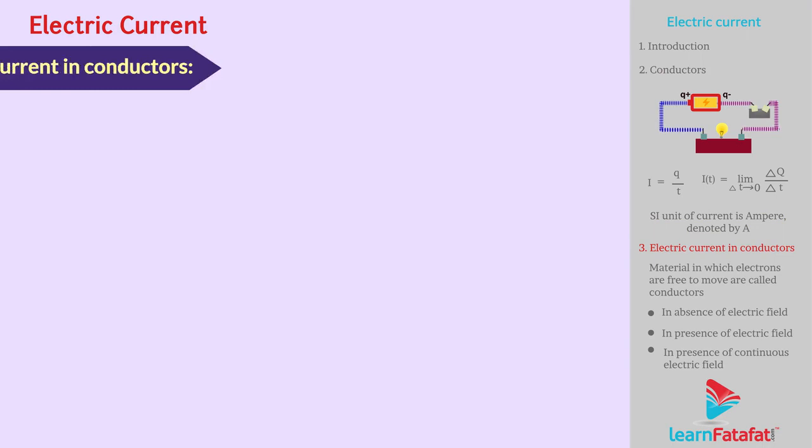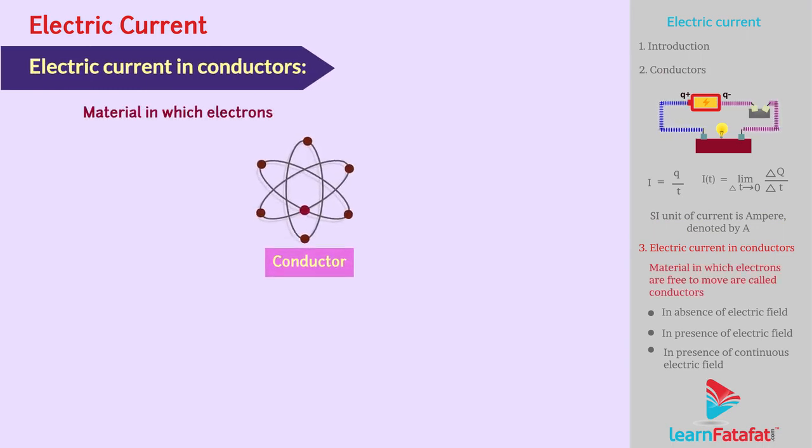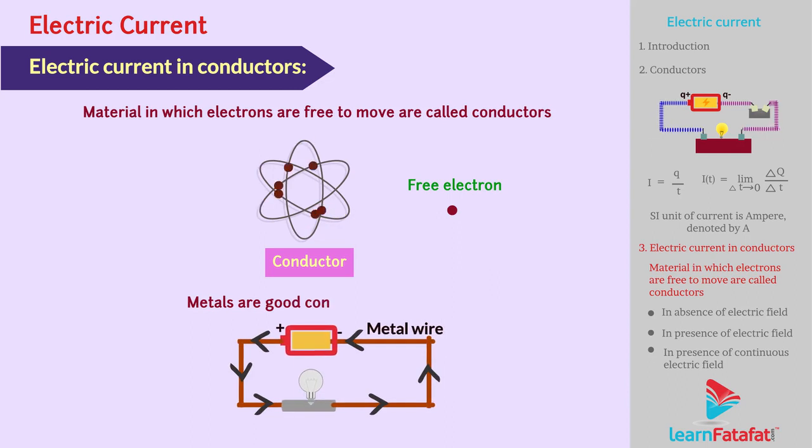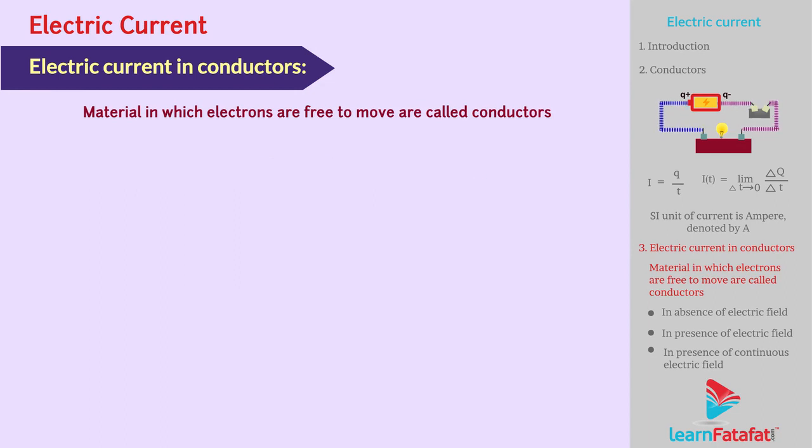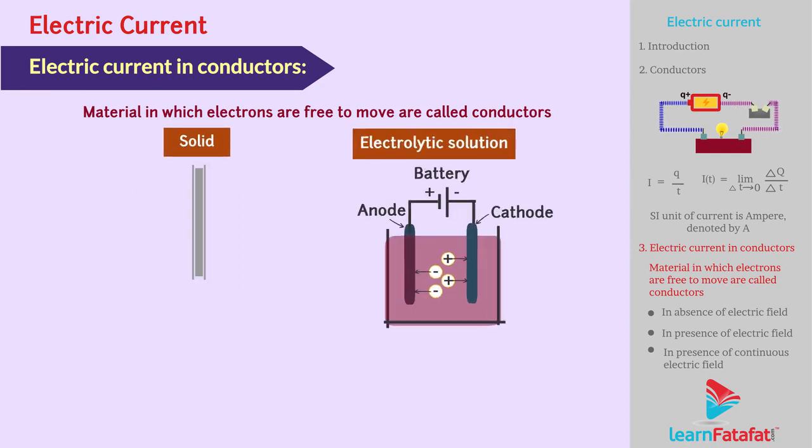Electric current in conductors. Materials in which electrons are free to move are called conductors. Generally, metals are good conductors of electricity.